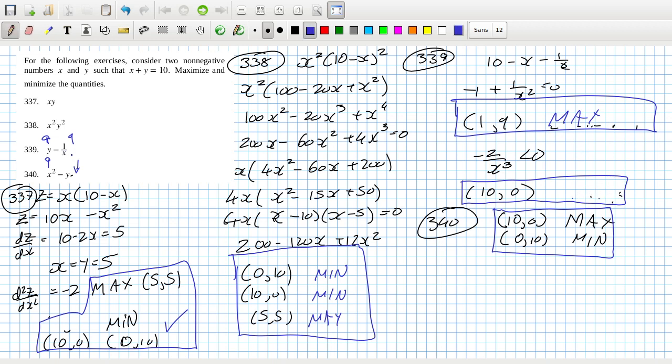So. Put in 10. 10, 0 is definitely a min. 10, and 339. Because if you put in 10. If you put in 0 here. And 10 here, it's a negative.